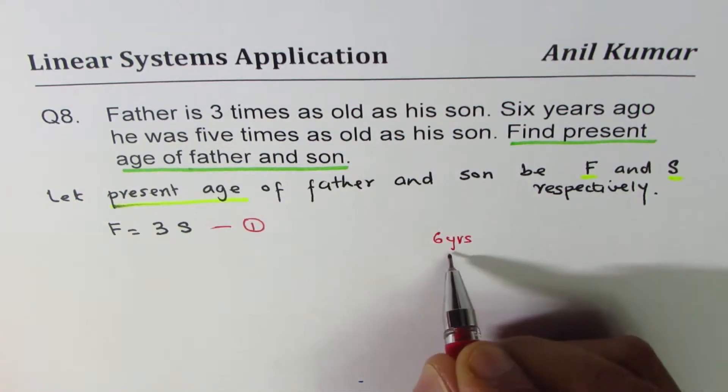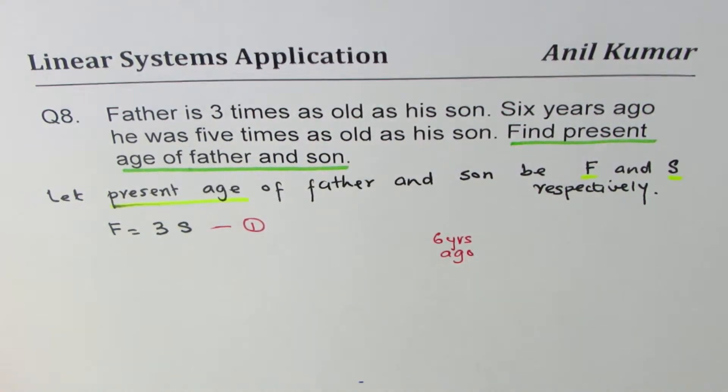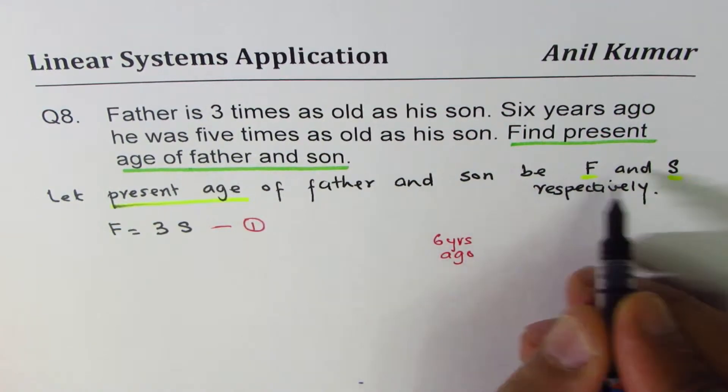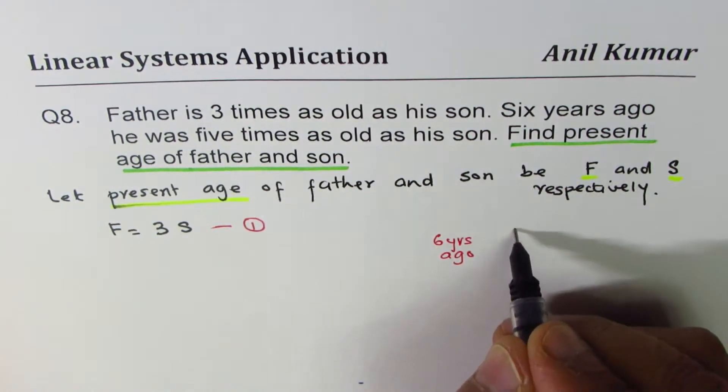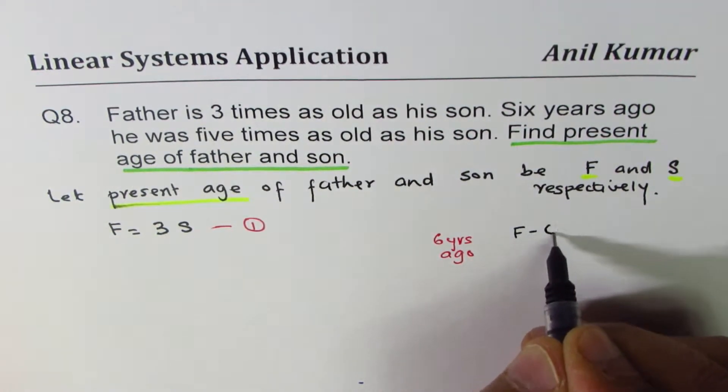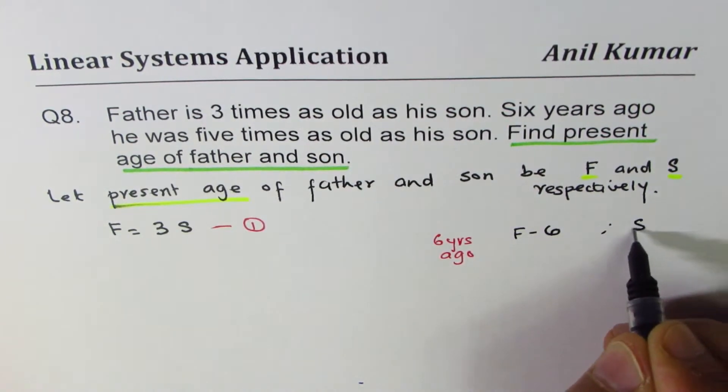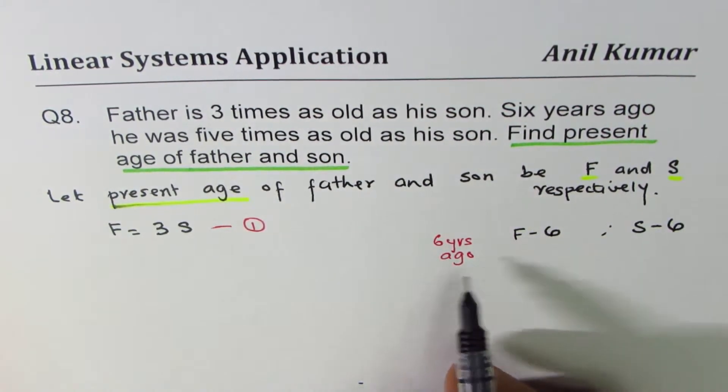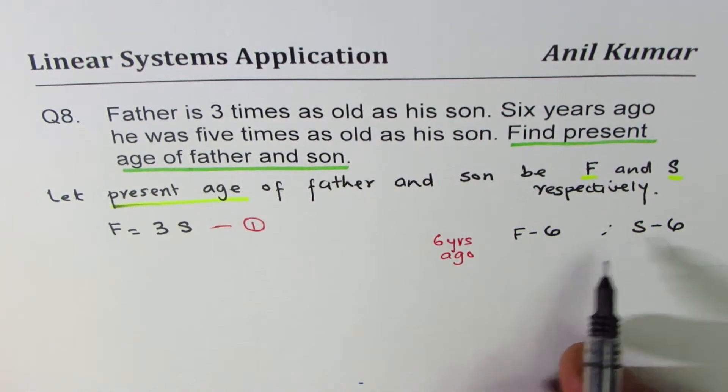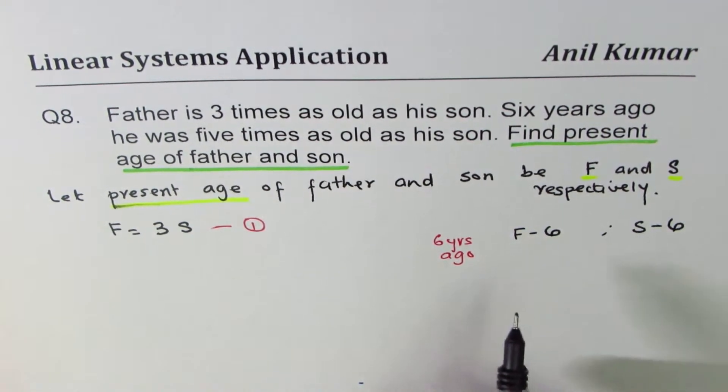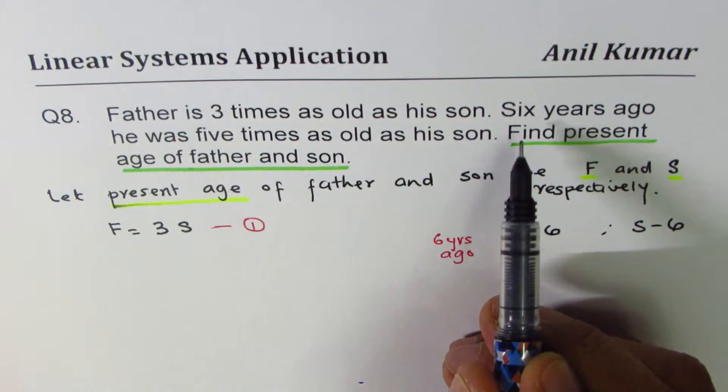Six years ago, what was the age? That is what you have to think. So they were younger by six years. Six years ago, father was F minus six and the son was S minus six. Do you see that? Six years ago, that is the situation. They are six years younger.